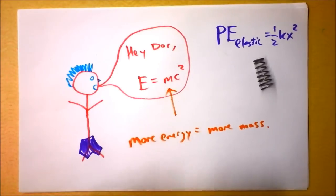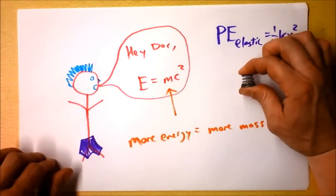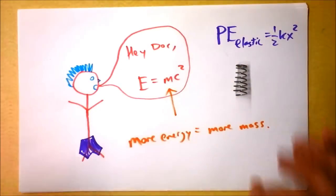If you want to look at it in an Einsteinian way, compressing the spring actually curves spacetime near the spring more than it did previously. Exactly. Good.